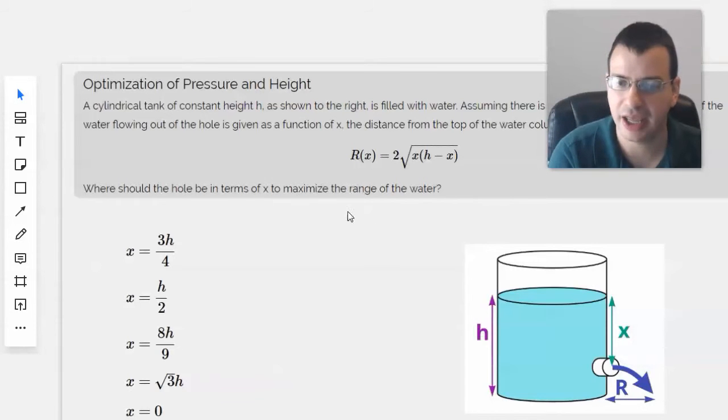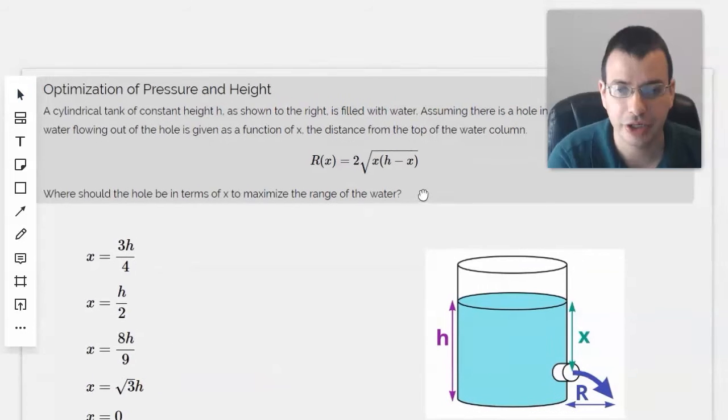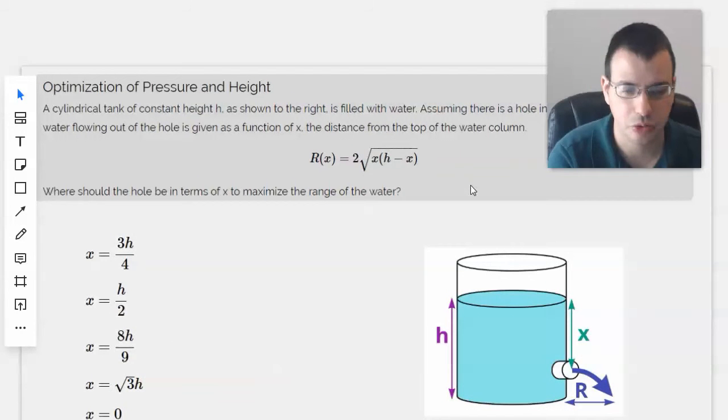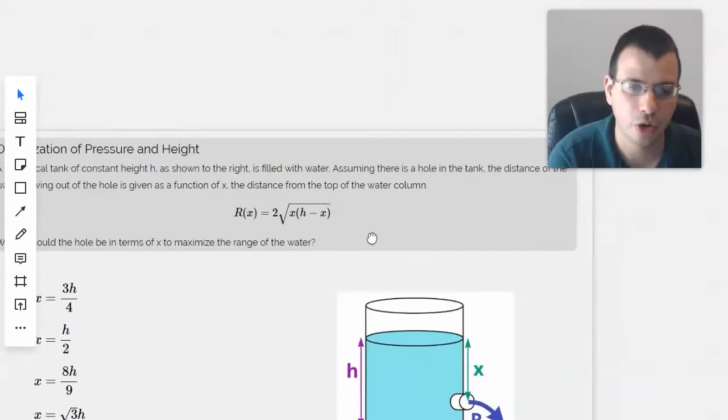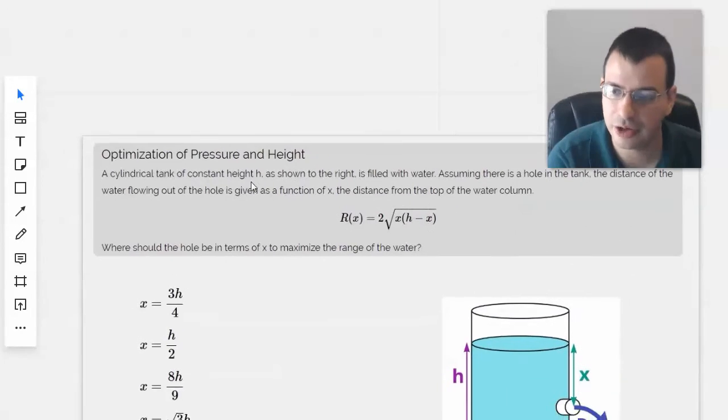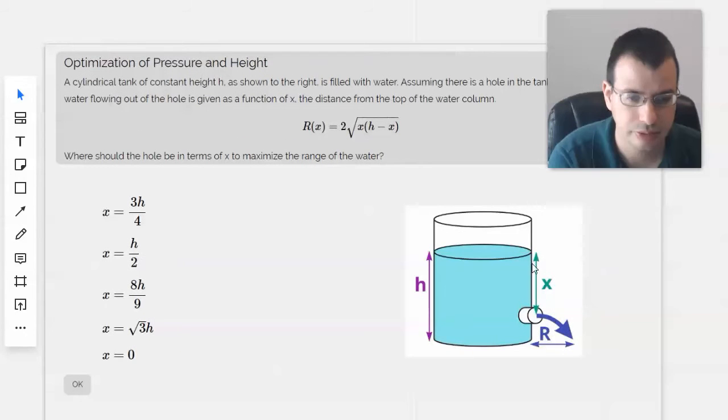A cylindrical tank of constant height h, as shown to the right, is filled with water. Assuming there is a hole in the tank, the distance of the water flowing out of the hole is given as a function of x, the distance from the top of the water column.